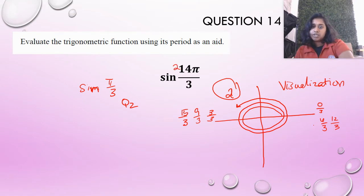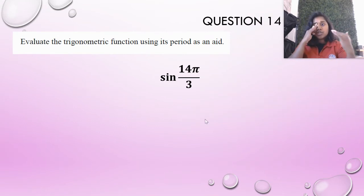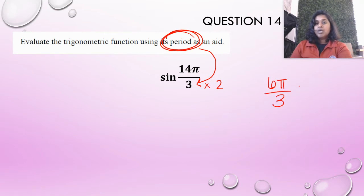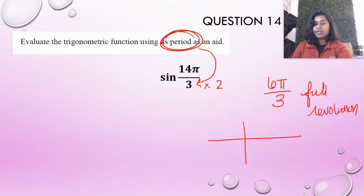You really want to sit there and go 0, 3, 6, 9, 12, 15, 18, all the way to 214? That just seems like chaos. So let's actually use the period as an aid. And that's really simple because to get the period as an aid, I go to the denominator of my radian and I multiply by 2. So that's going to be my numerator. So 6π over 3 would be one full revolution.